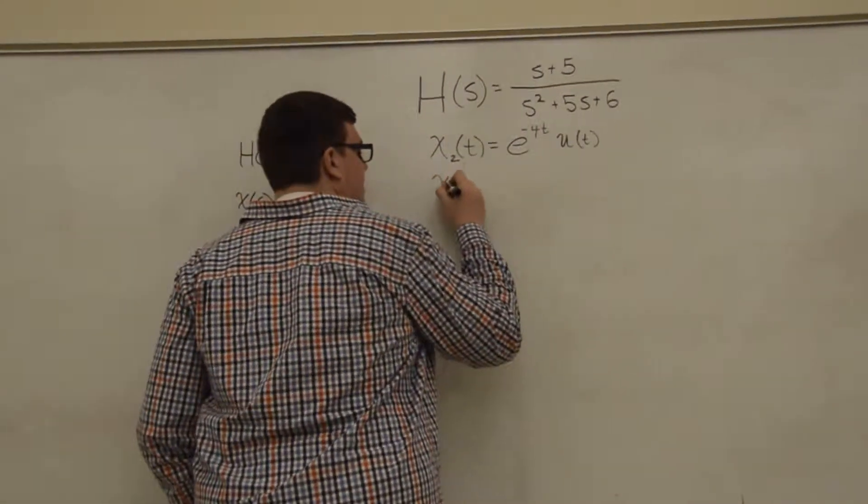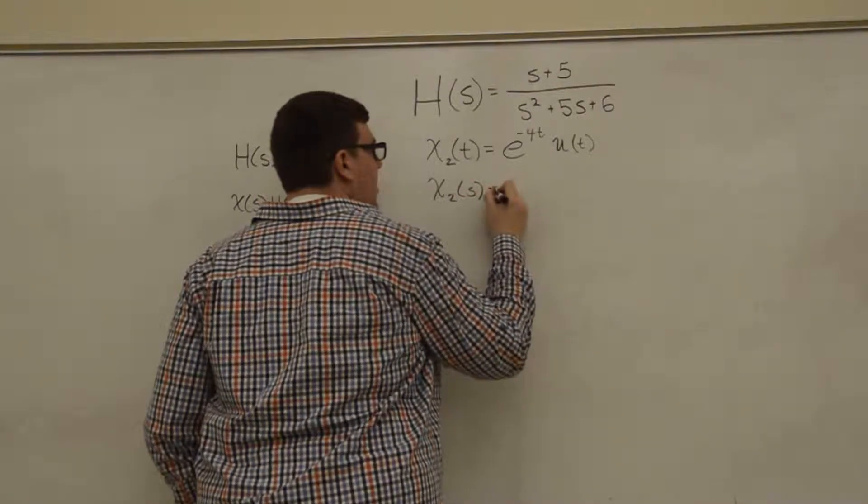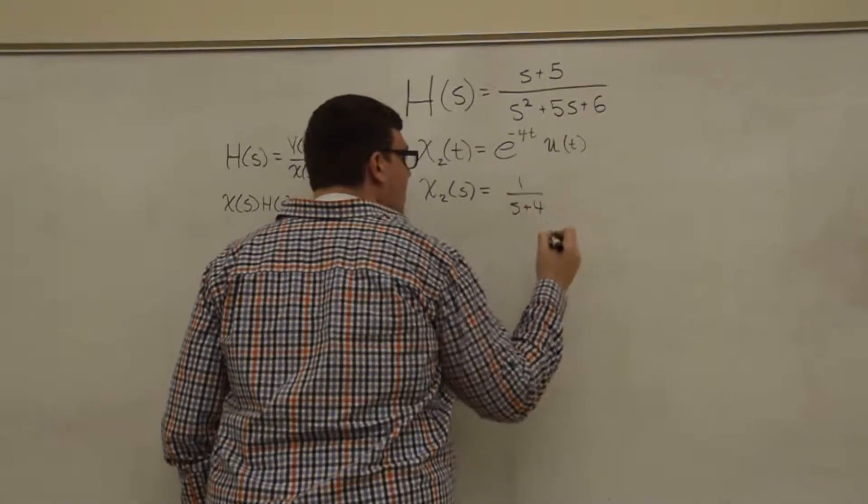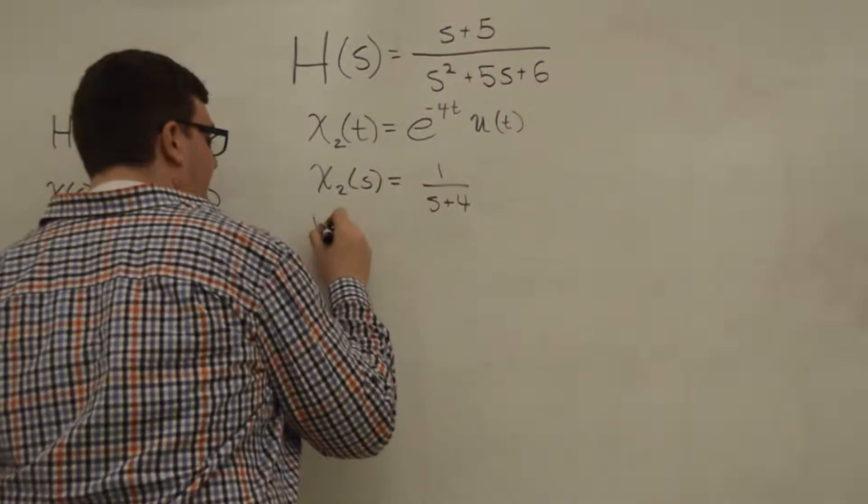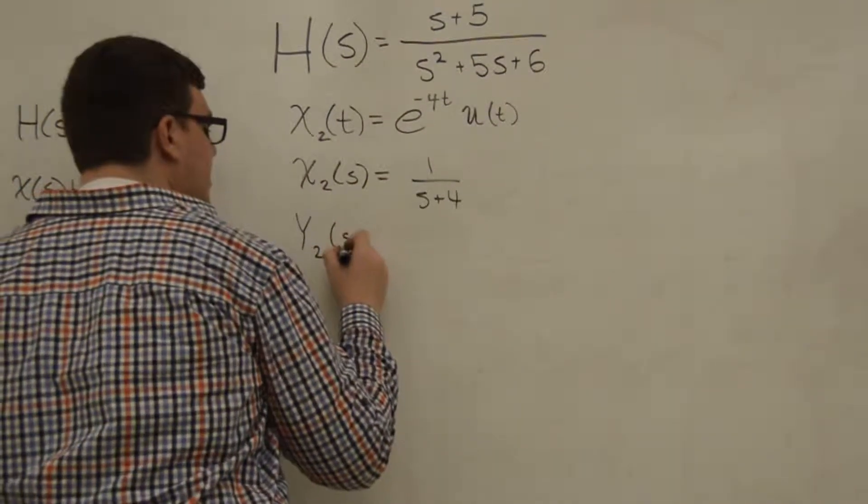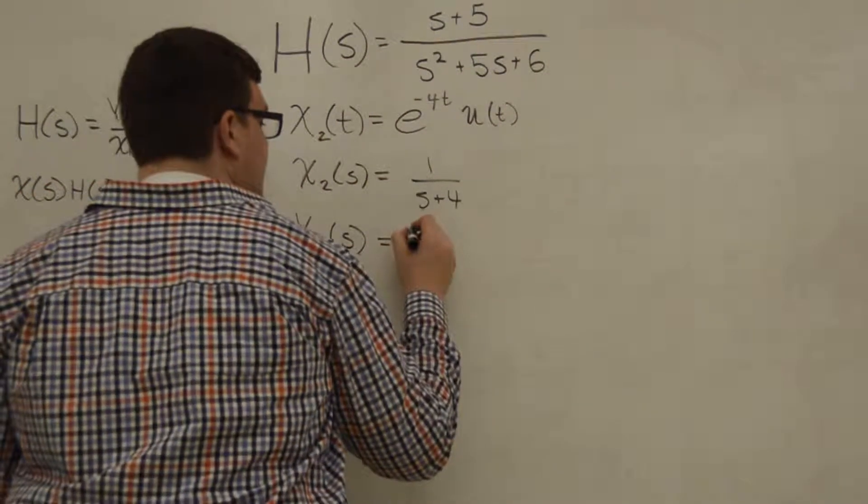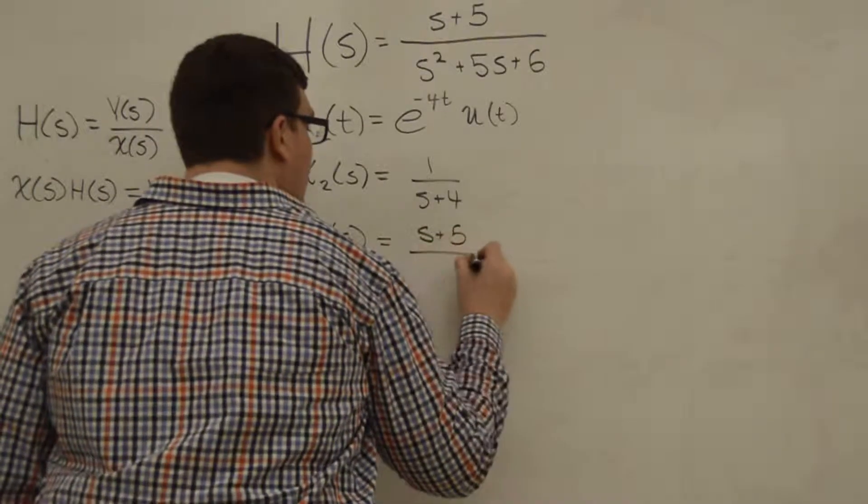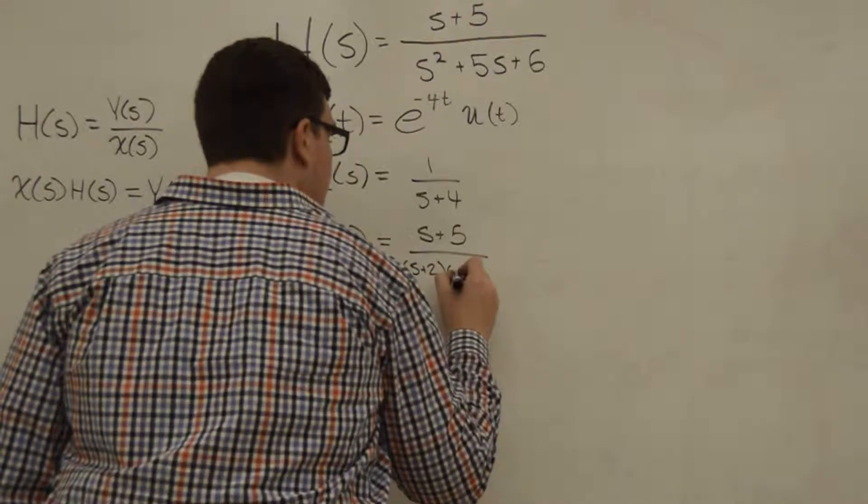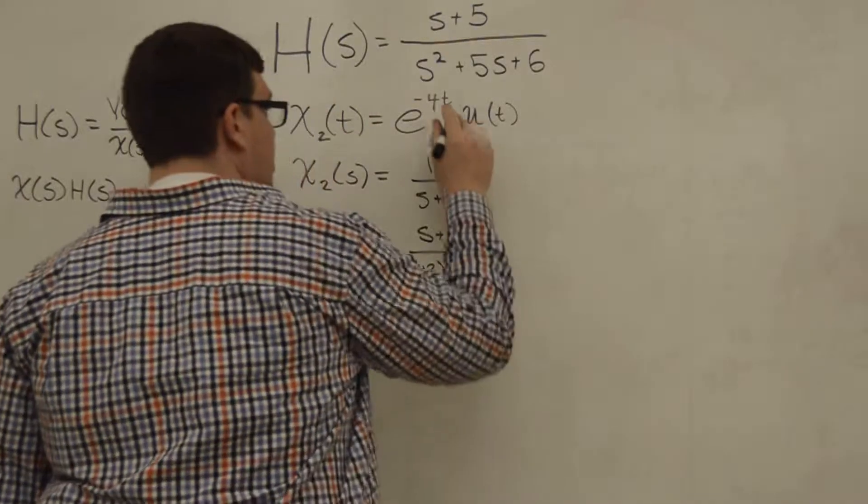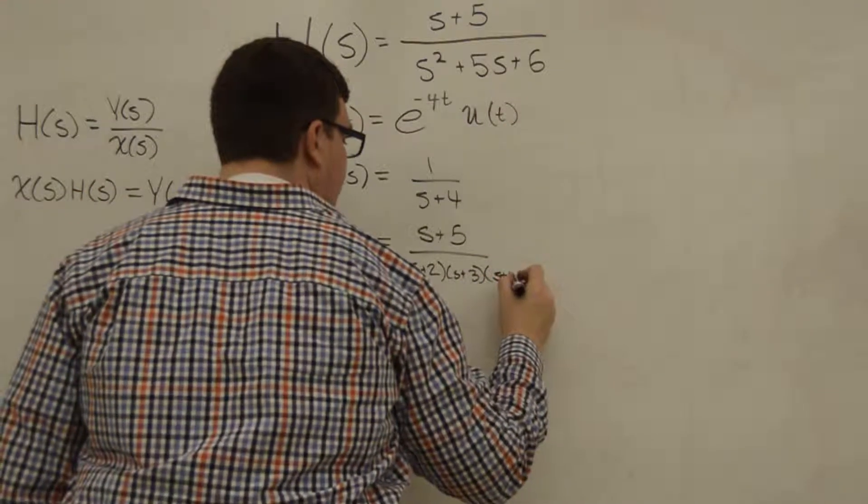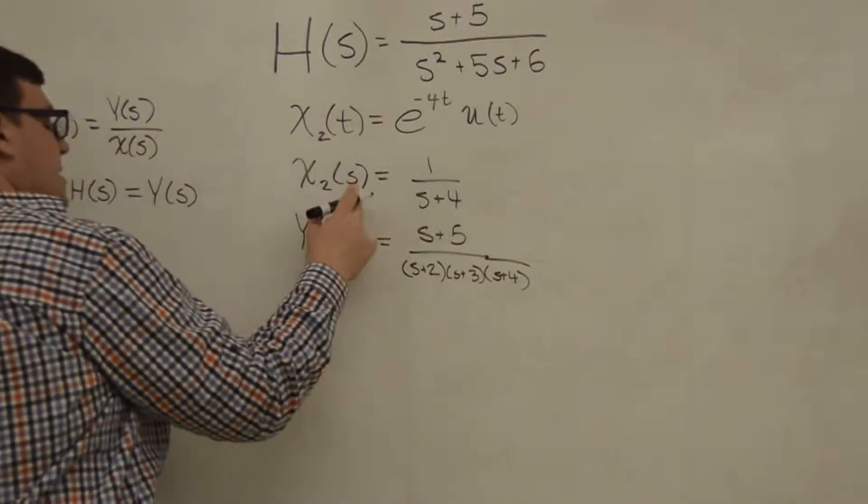We take x₂(s), and that's going to be 1/(s+4). Then we multiply it by our transfer function to get Y₂(s), which in this case is going to be (s+5) over (s+2)(s+3), which is just this polynomial factored, times (s+4), which comes from x₂.